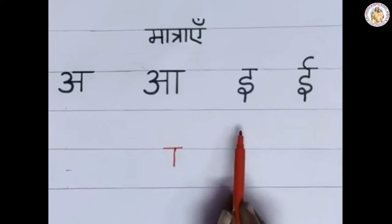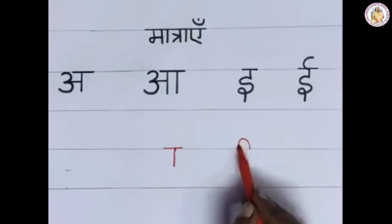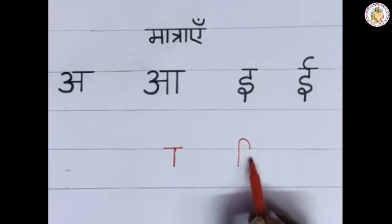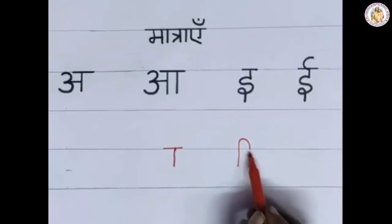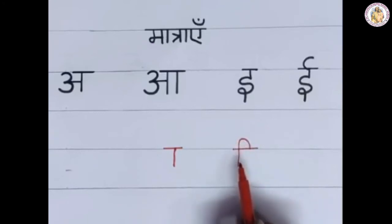Next one is 'i' (Choti i). You have to draw a curve and bend it towards the bottom, to the left hand side of the vyanjan. Draw a curve like this. This is the 'i' Matra — that is Choti-i-ki Matra.